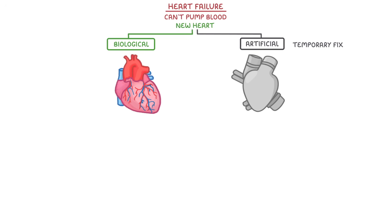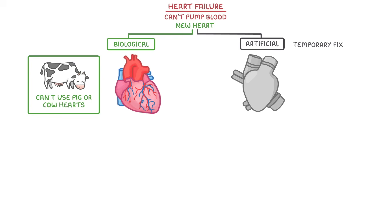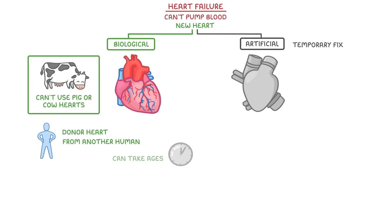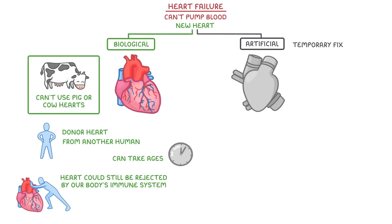This brings us to another problem, which is that we can't use pig or cow hearts, so we have to find a donor heart from another human, which can take ages. And even if we do find a donor heart and undergo a successful heart transplant, the heart could still be rejected by our body's immune system, as they might see the heart as foreign and try to destroy it. This brings us to one of the few advantages of artificial hearts — because they're made of metals and plastic rather than living tissue, our immune system doesn't try to destroy them.